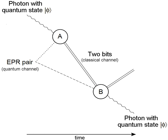A true quantum repeater allows the end-to-end generation of quantum entanglement, and thus, by using quantum teleportation, the end-to-end transmission of qubits. In quantum key distribution protocols one can test for such entanglement. This means that when making encryption keys, the sender and receiver are secure even if they do not trust the quantum repeater. Any other application of a quantum internet also requires the end-to-end transmission of qubits, and thus a quantum repeater.